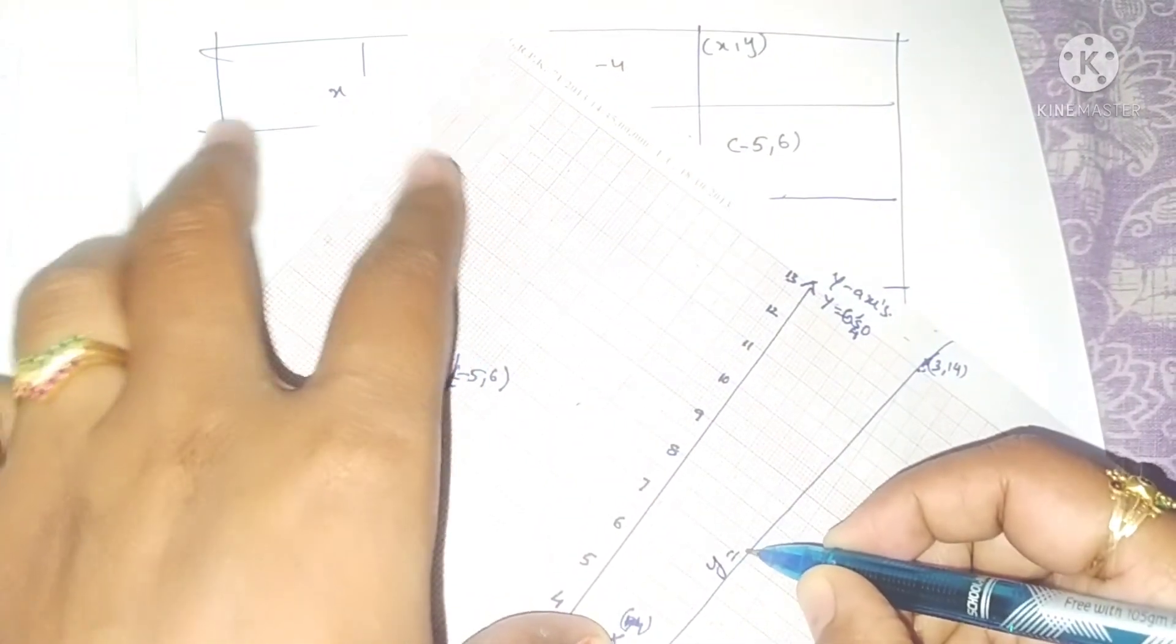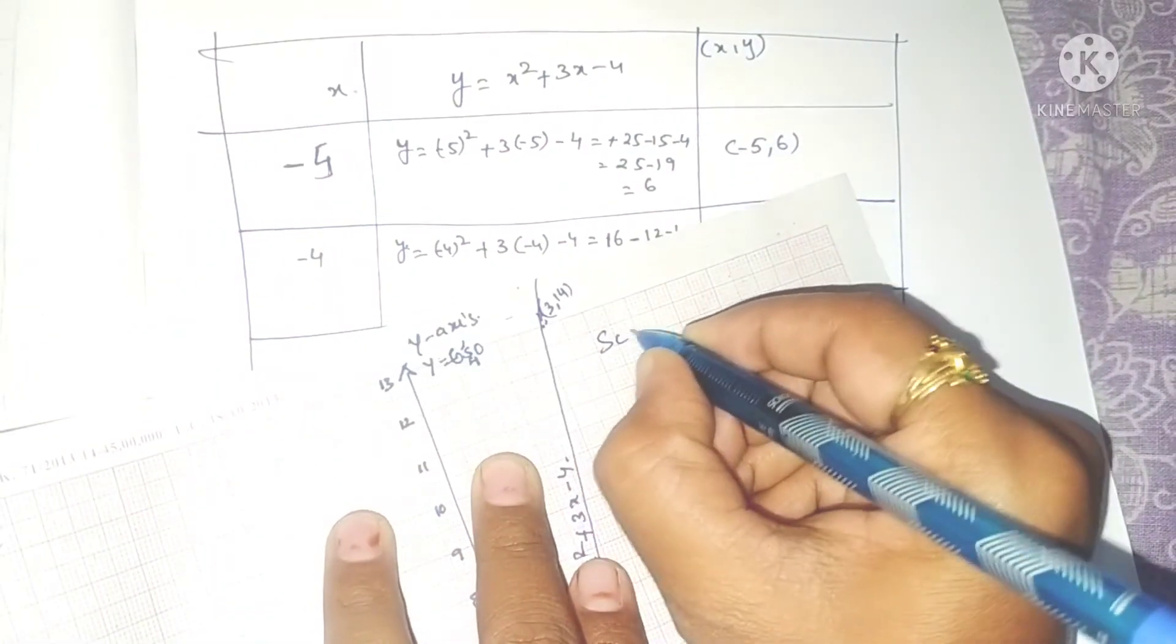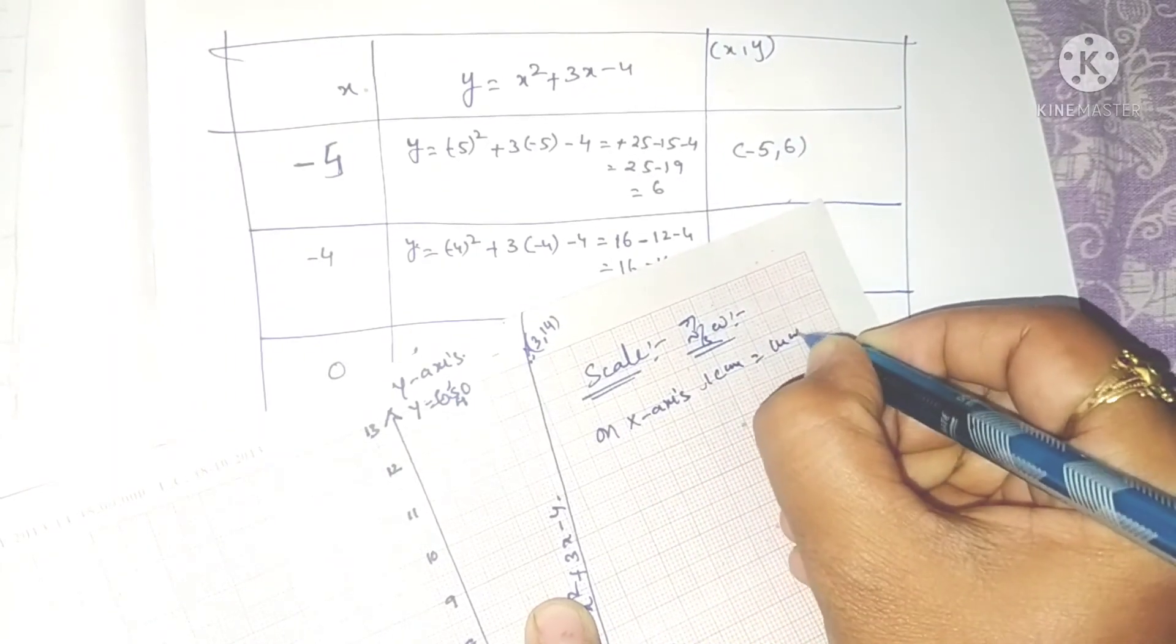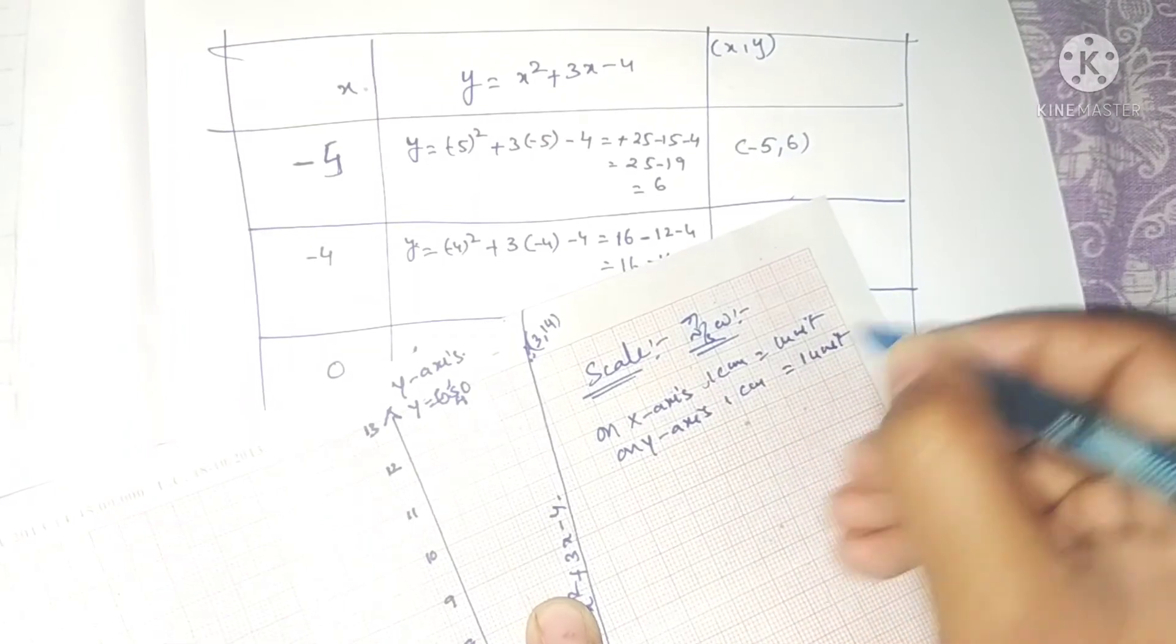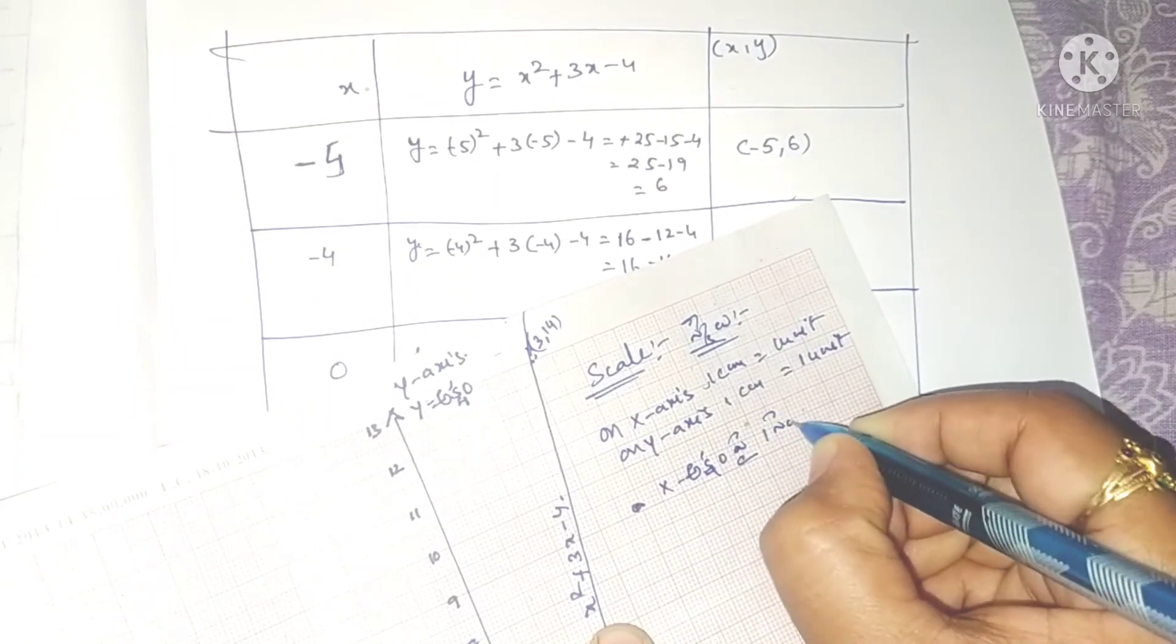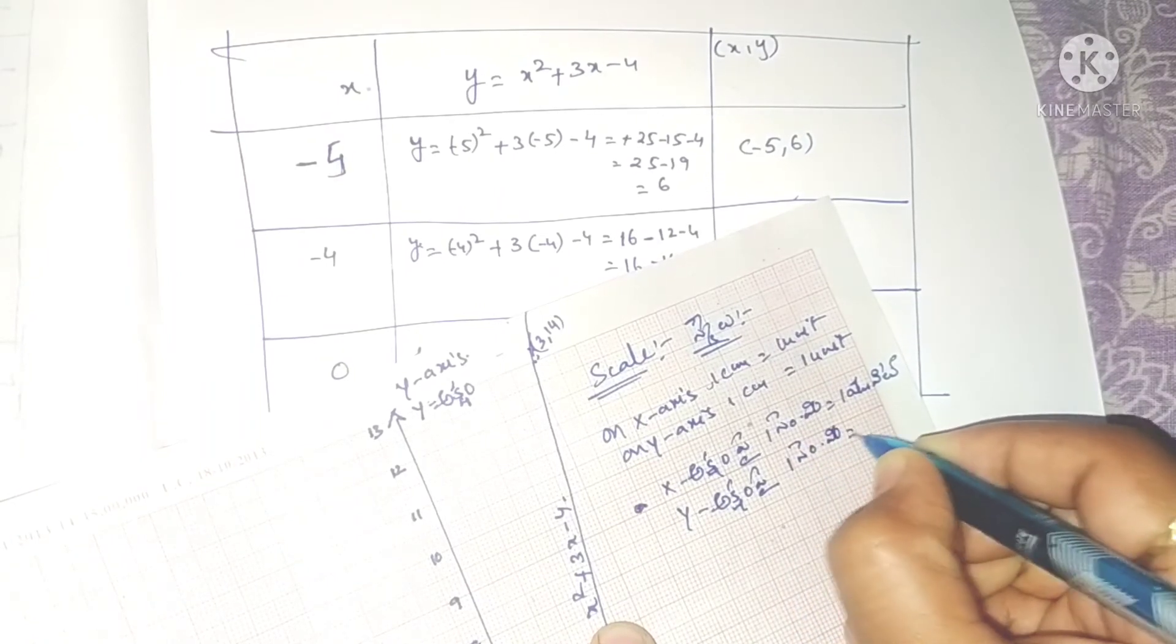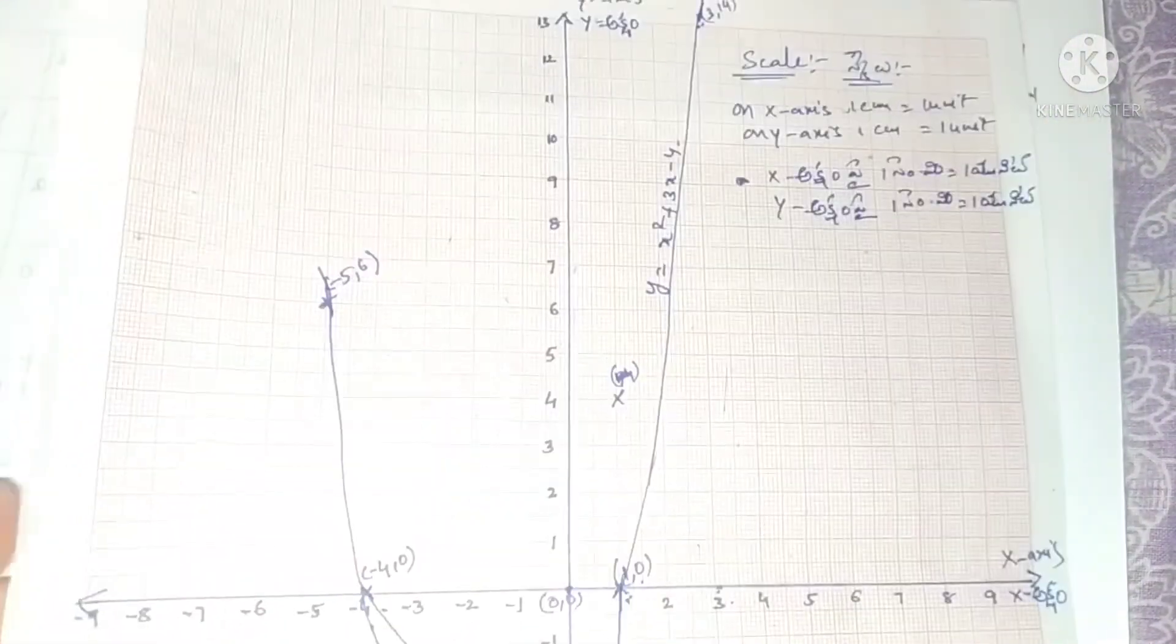The equation is y equals x square plus 3x minus 4. We need to mention the scale for each problem. On x-axis, one centimeter equals one unit. On y-axis, one centimeter also equals one unit.